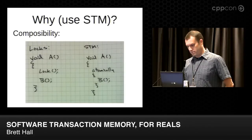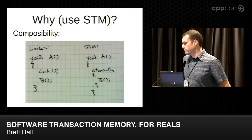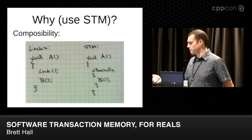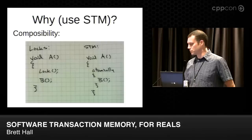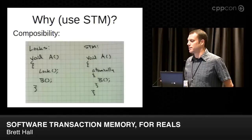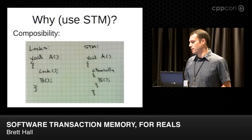On the other hand, with software transactional memory, we call function A, we start — let's say we have a keyword 'atomically' which starts a transaction — and then we call function B. It doesn't matter what B does; there's no way we can deadlock. It could start its own transaction. As long as your system supports nested transactions, you're okay. All the threads can make progress; there's no way to deadlock with this structure in our system.